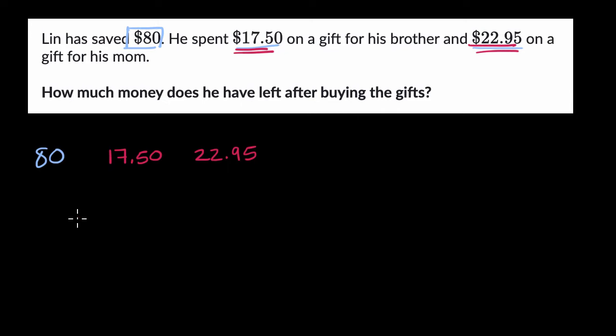Another way to think about it is, he's starting with $80. And then let's just take away the total amount that he spends. So what I have here in red, the $17.50 plus the $22.95, this is the total amount that Lin is spending on gifts for his family. So what we need to do is just subtract that from the original $80 that he starts with.